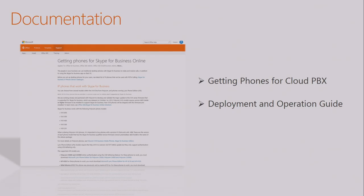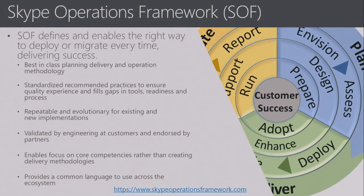Everything I'm talking about here is being documented. We're releasing two documents for phones: one is 'Getting Phones,' which helps decision makers decide what phone to buy, what features it has, and what existing phones are supported — everything needed to buy the right phone for Cloud PBX. The next is a deployment and operation guide. Now we publish literally every couple of days if needed — any new feature or bug fix will appear in the documentation immediately.